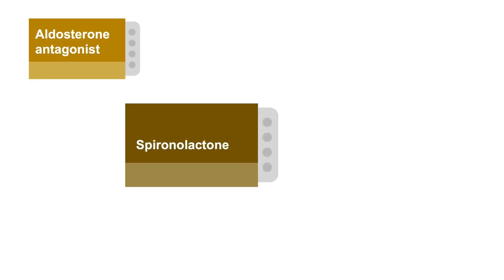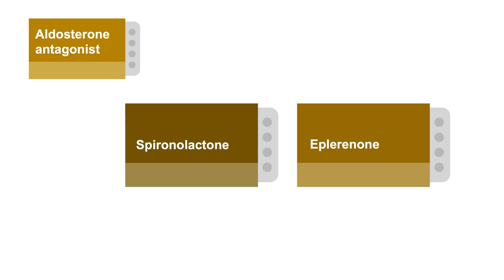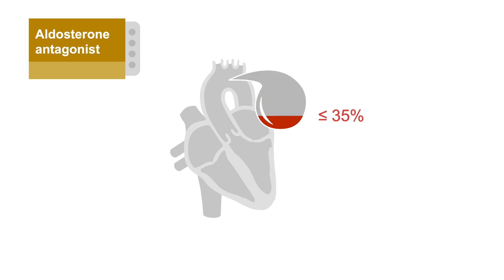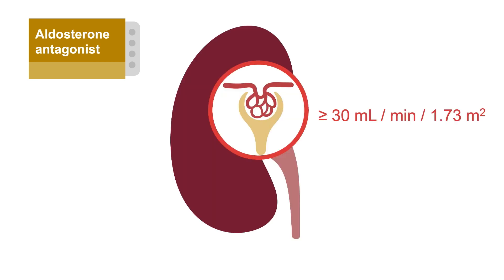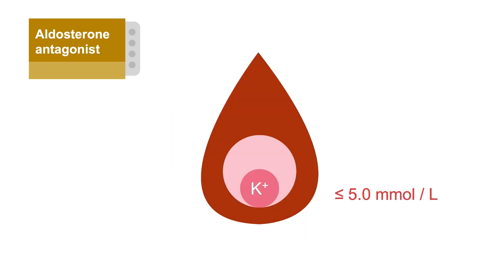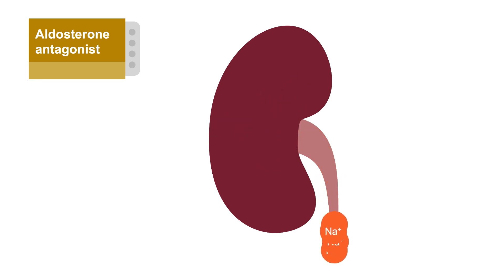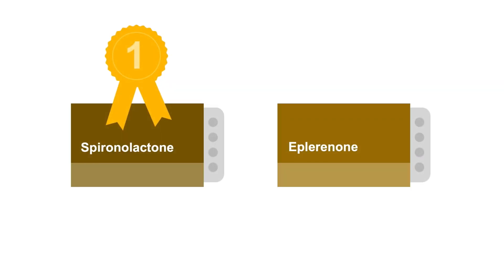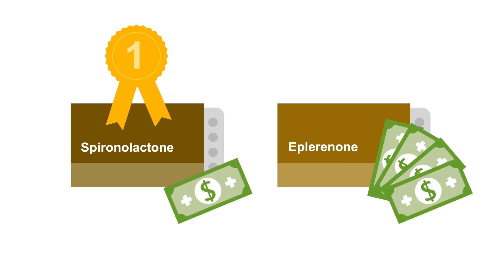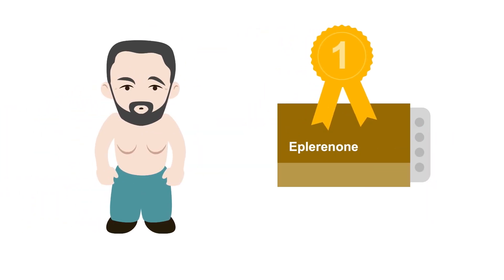Aldosterone antagonists such as spironolactone and eplerenone are approved for any symptomatic HFrEF patients with an ejection fraction of 35% or less, a glomerular filtration rate of at least 30 mL per minute, and a potassium level of 5 mmol per liter or lower. Aldosterone antagonists block the hormone aldosterone, resulting in increased sodium and water excretion by the kidneys and lessening of congestive symptoms. The main concern with these medications is hyperkalemia. You need to monitor potassium levels and renal function three and seven days after starting medication, then monthly for three months and every three months after that. Always start with spironolactone because it's the less expensive option. Only switch to eplerenone if spironolactone causes gynecomastia.